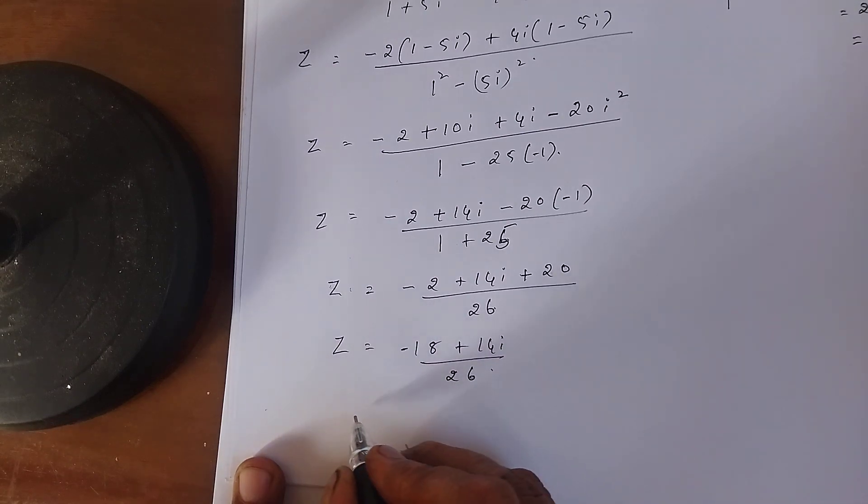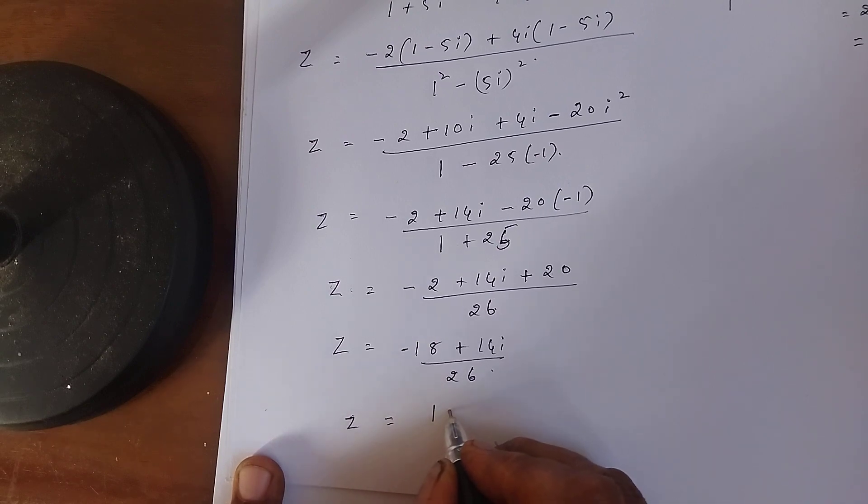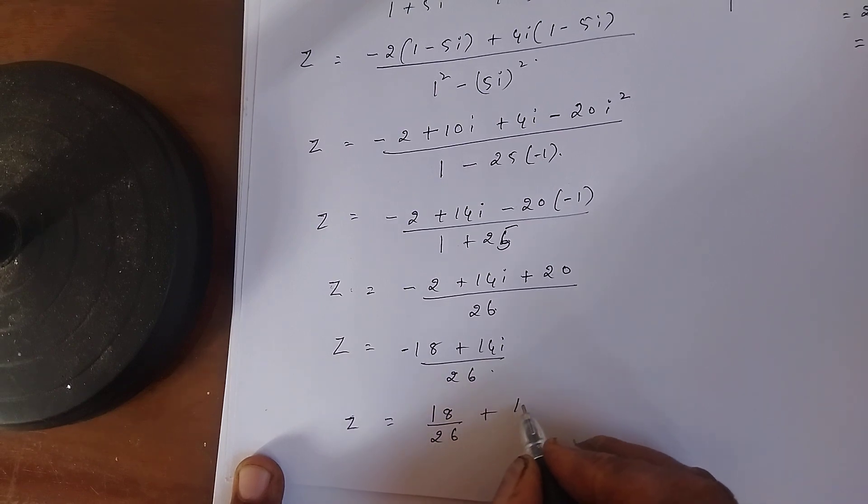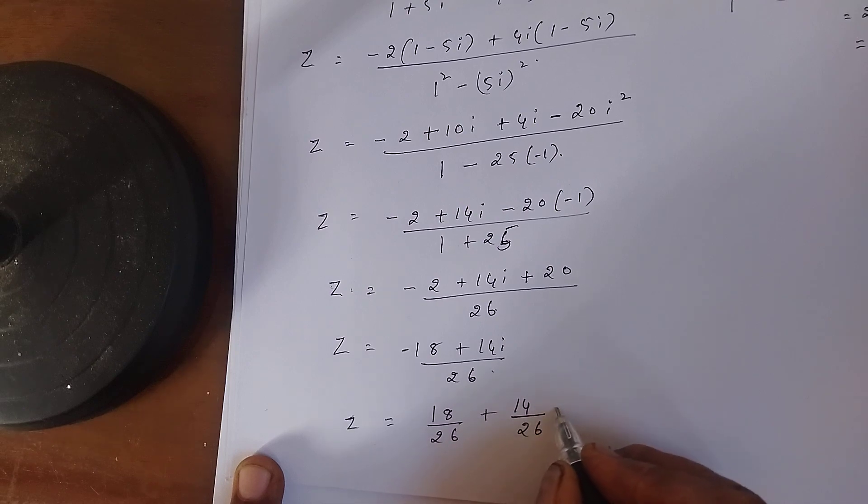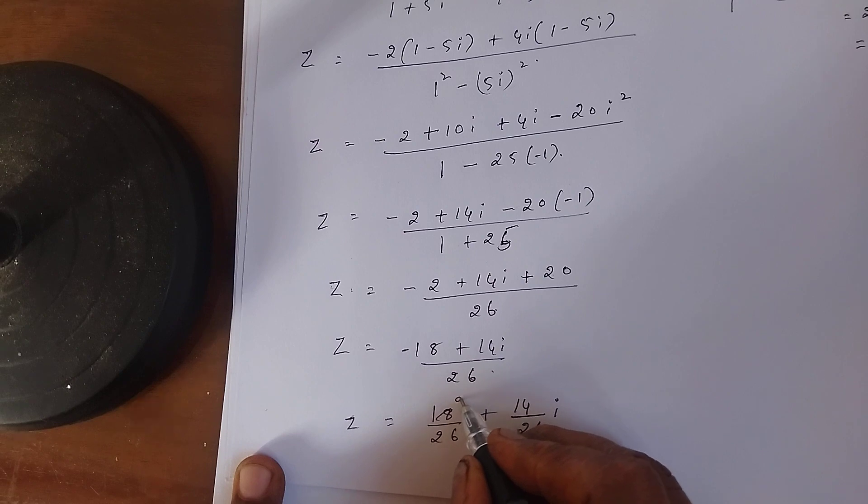Now how to write as x+iy form. Z equals 18 divided by 26 plus 14 divided by 26i. Or we can write like this also.